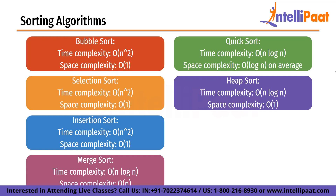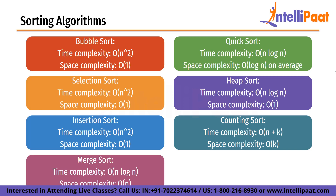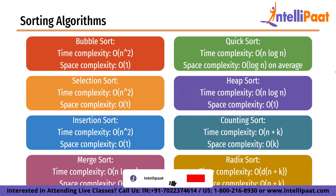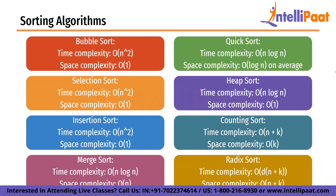Heap sort builds a heap data structure from the list and repeatedly extracts the minimum element, placing it at the end — O(n log n) time, O(1) space. Counting sort counts the number of occurrences of each element and uses this to sort the list; it only works for non-negative integers — O(n+K) time and O(K) space where K is the range of values. Radix sort sorts elements by considering individual digits or bits from least to most significant, requiring a stable sorting subroutine — O(n*D) time where D is the number of digits and K is the range, with O(n+K) space complexity.